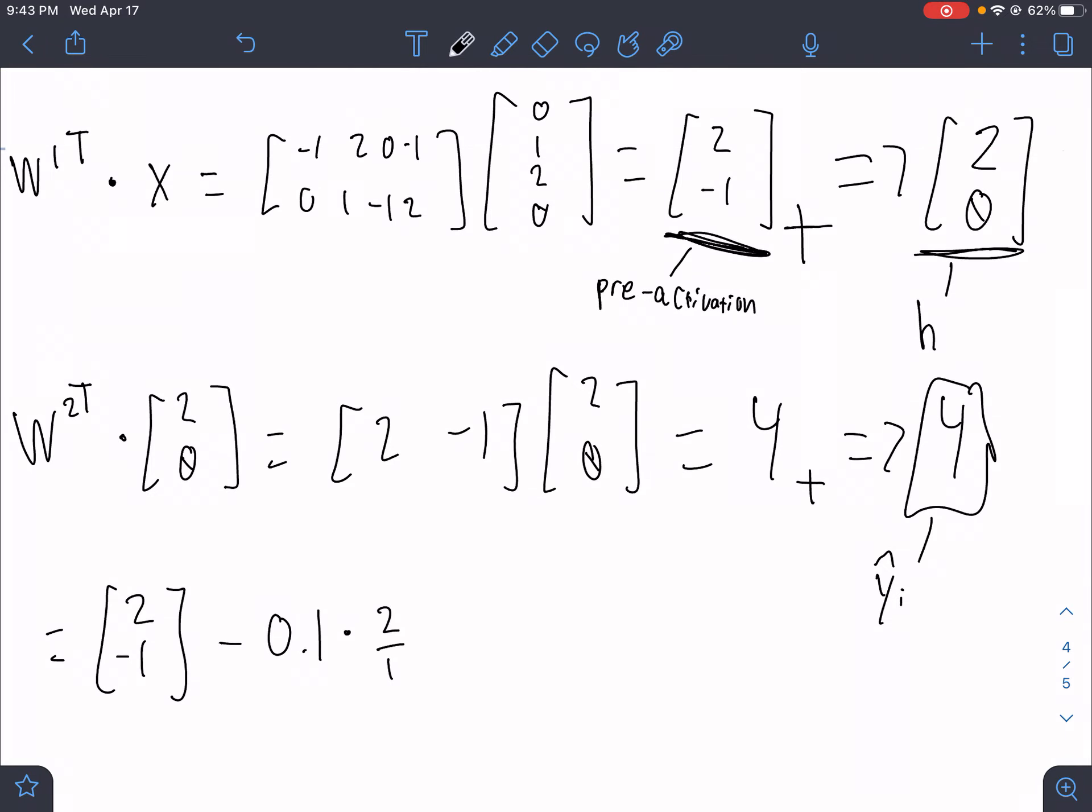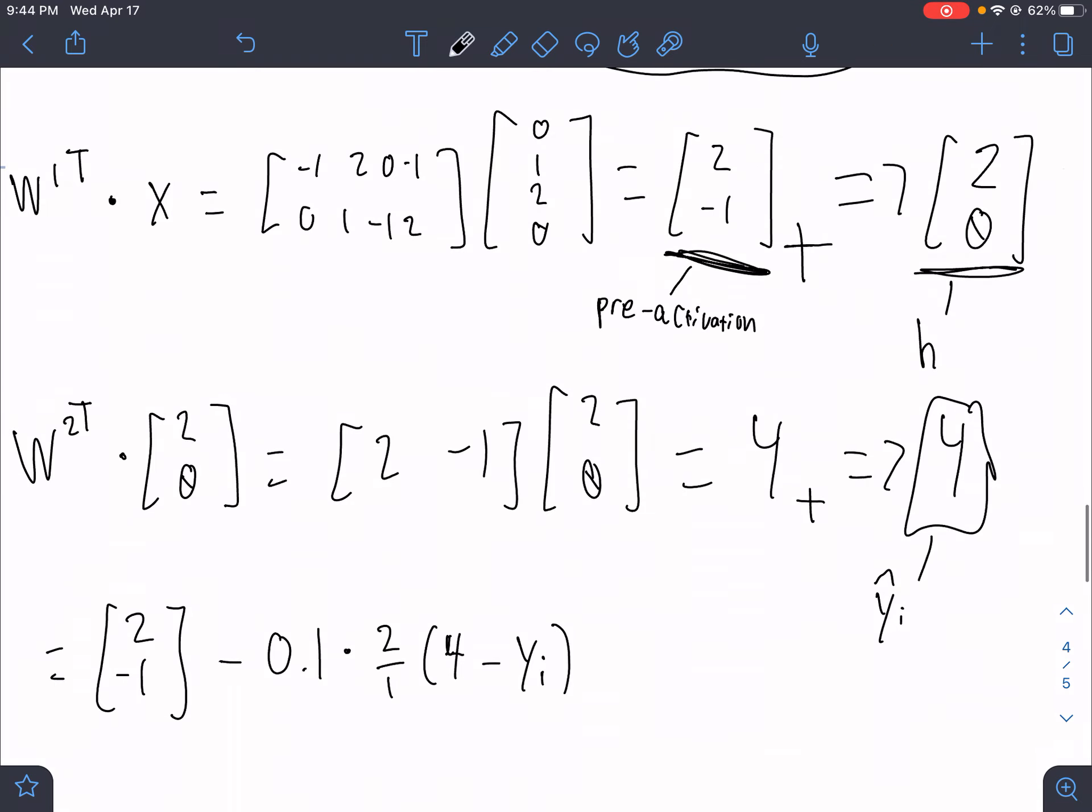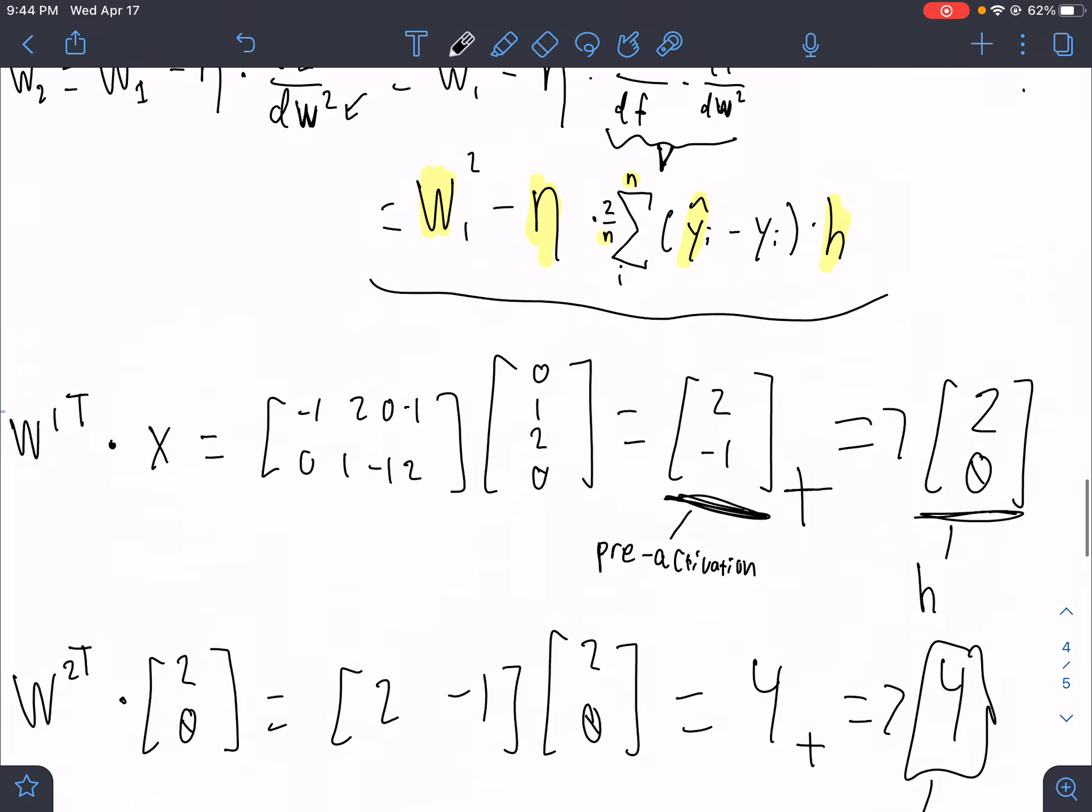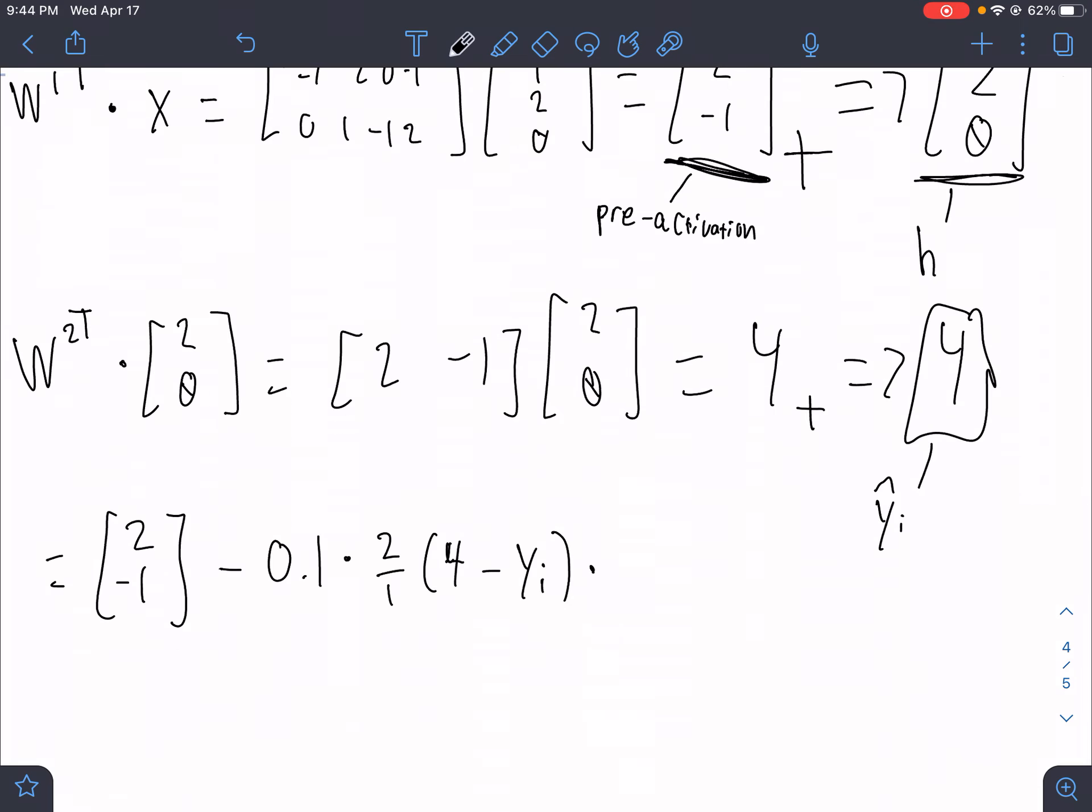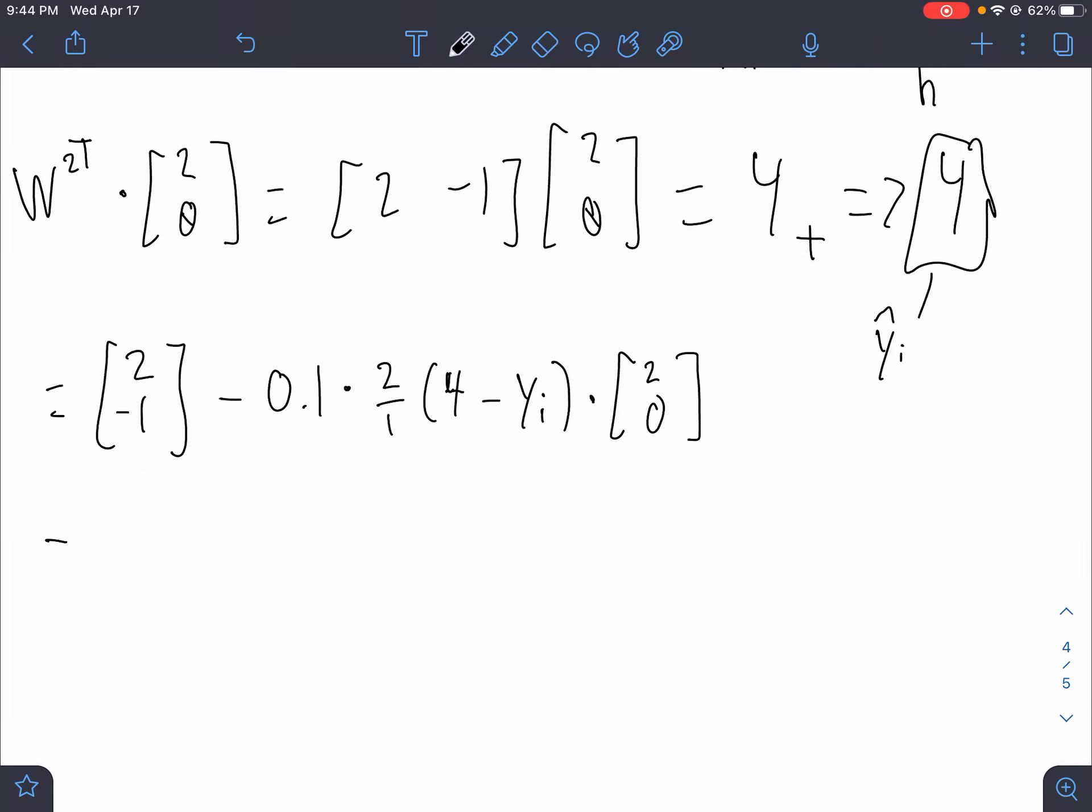The sum of every single sample, well we only have one sample so I'm going to get rid of the sum, and we'll just find our output which is 4, minus y initial or yi. We're not given yi so we can't calculate that. And I think we multiply this by h. All that's left for us to do now is we solve this.